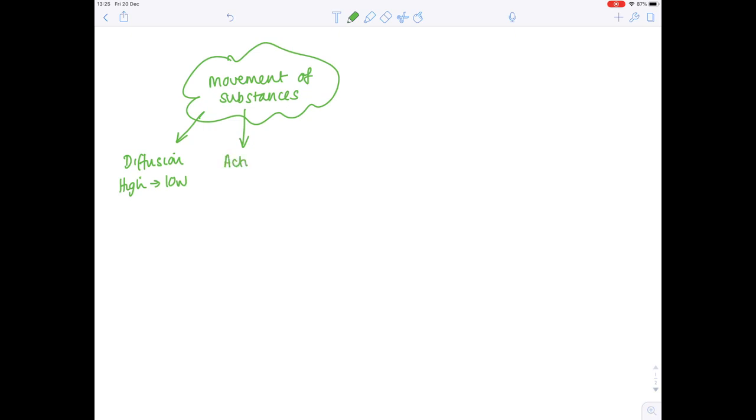Active transport is the opposite of that. It's from low concentration to high concentration and it does require energy because it is an active process. Lastly, osmosis, which is a variant of diffusion.